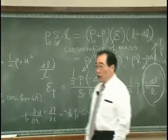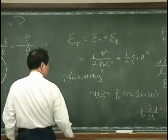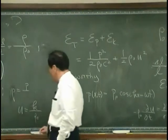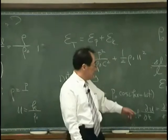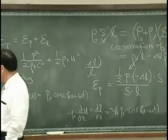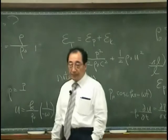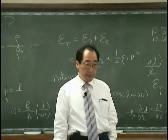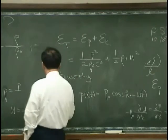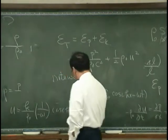Then the velocity U is equal to k over rho 0, and I have to integrate this with respect to time, that gives me minus omega. And then I have cosine KX minus omega T.